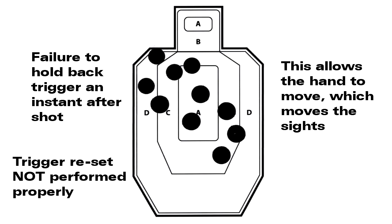Releasing the trigger too soon allows the hand to move which moves the sights. Solution: think the word follow through as you hold the trigger back an instant after the rifle discharges and you will solve the problem.